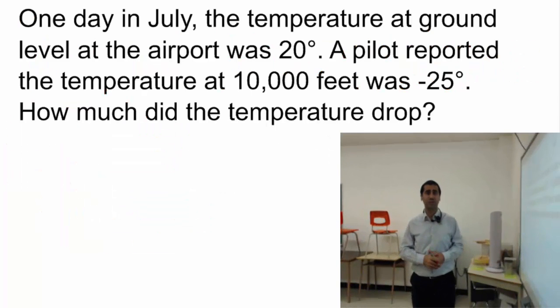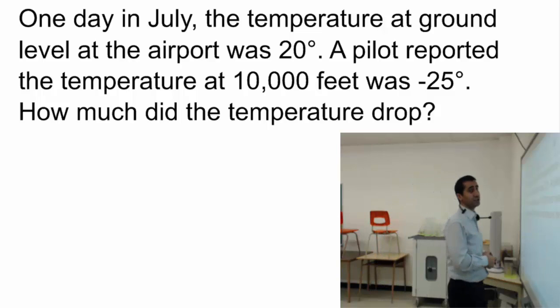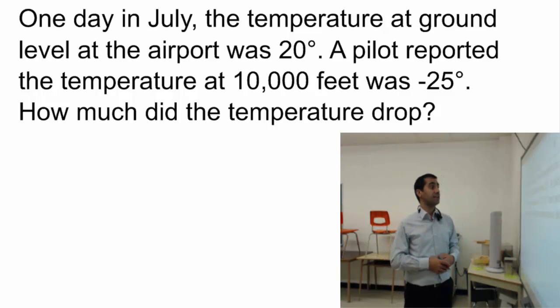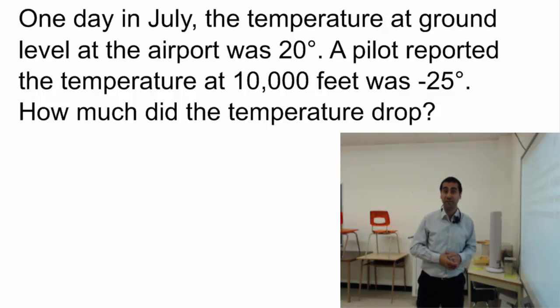So, we have a word question here. In this question, it tells us that the temperature at the ground level was 20 degrees. And the pilot reported that it is at 10,000 feet above. It is minus 25 degrees. It's colder. So, the question is, how much the temperature dropped? So, that's the question.